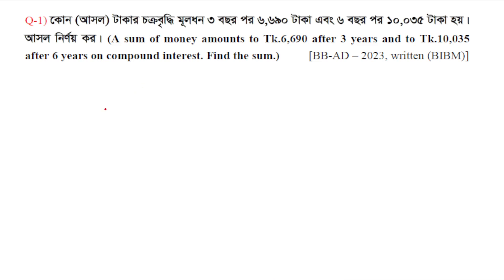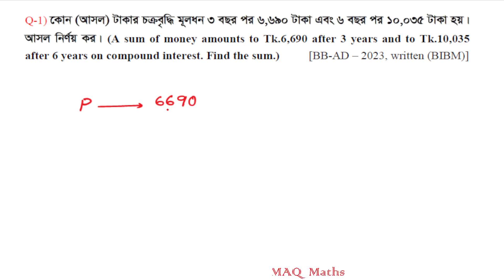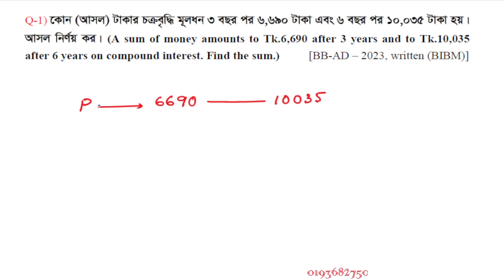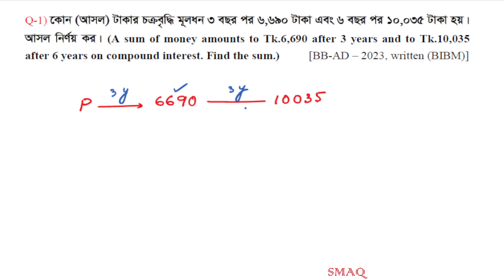To find the principal, let the principal be P taka. After three years on compound interest it becomes 6690 taka. Then after another three years it becomes 10,035 taka. So P grows to 6690 in three years, and 6690 grows to 10,035 in the next three years.